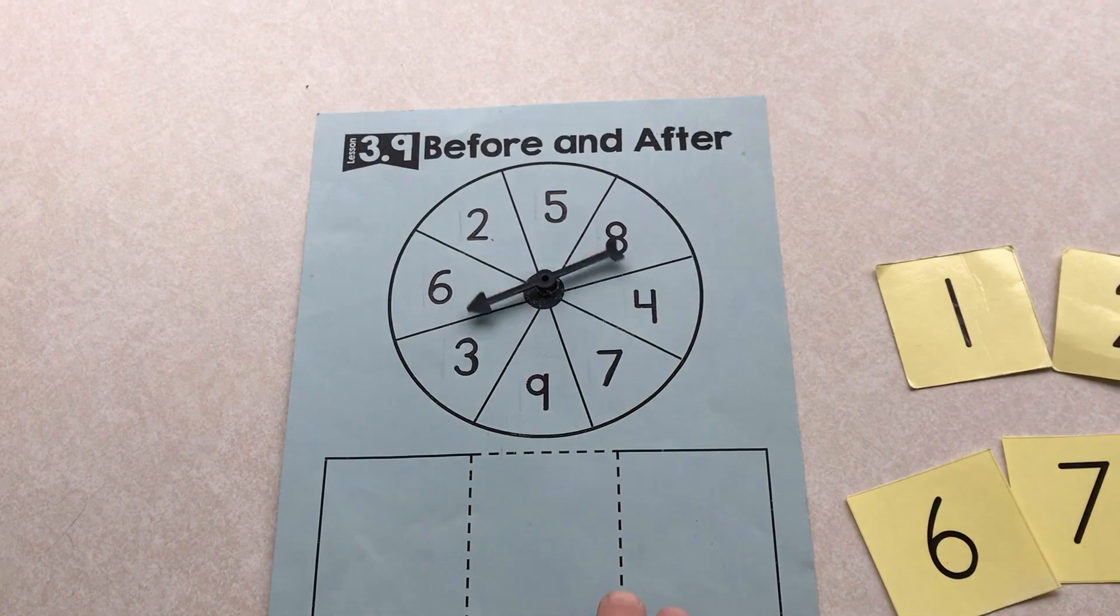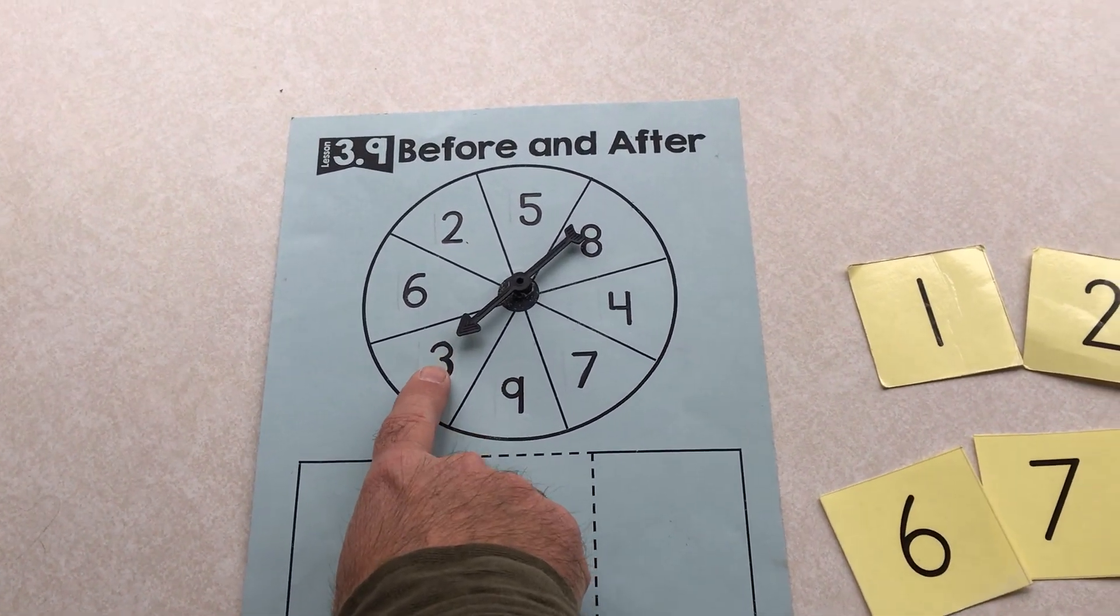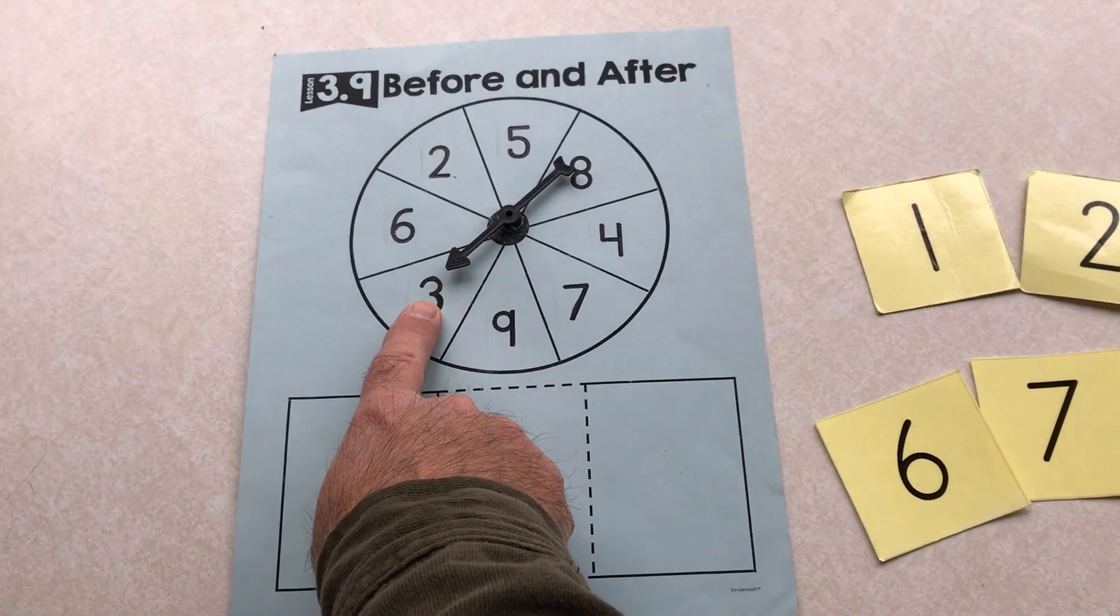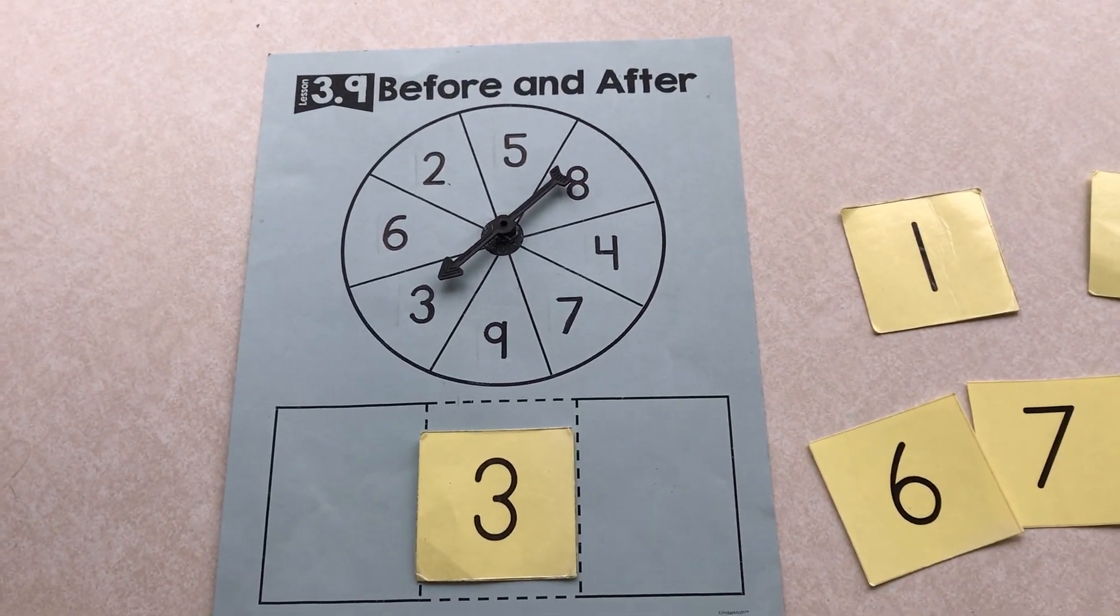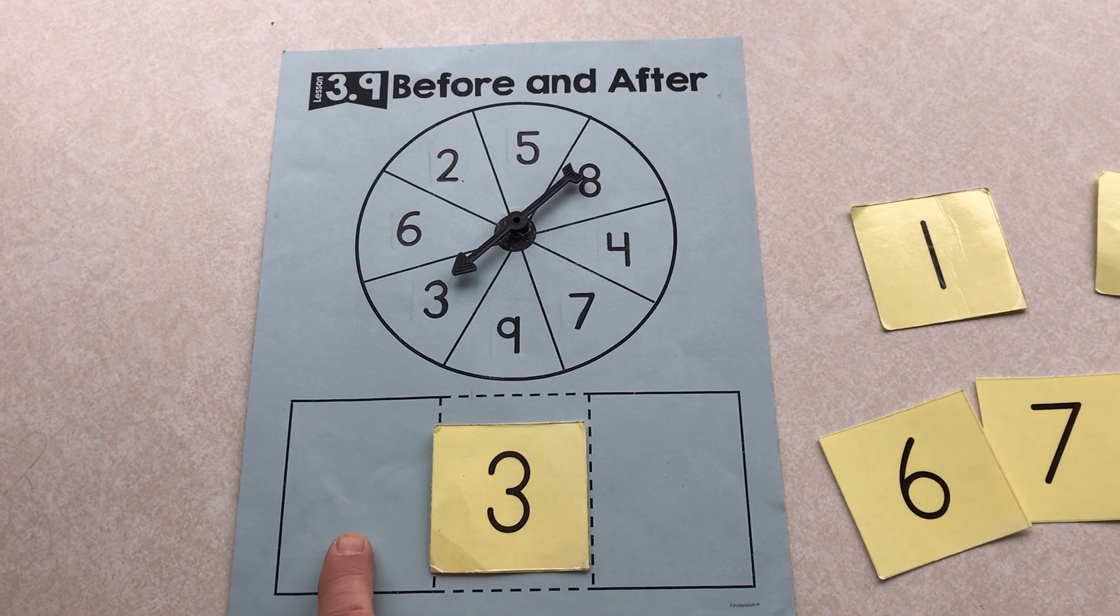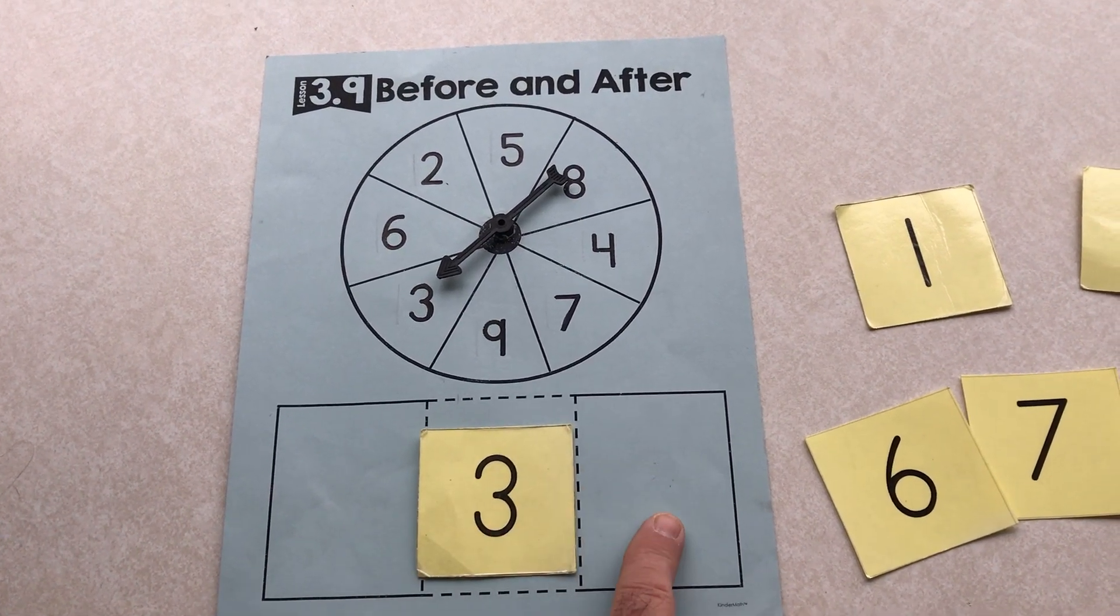So I'm going to start by spinning and it's pointed to number three. I'm going to put the three card in the middle and now I want to find the numbers that go before and after three.